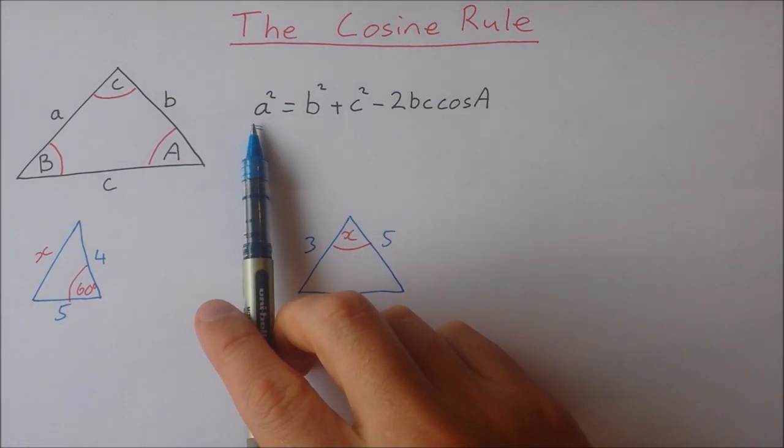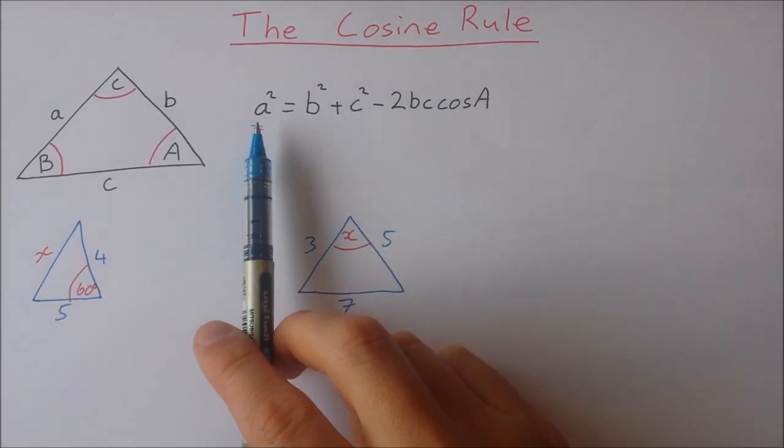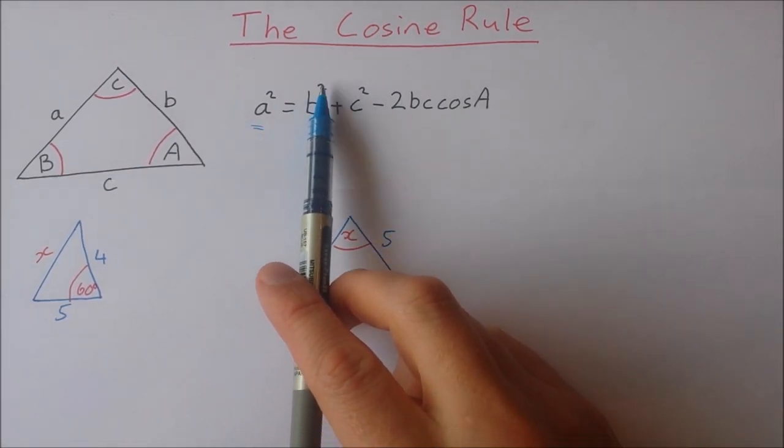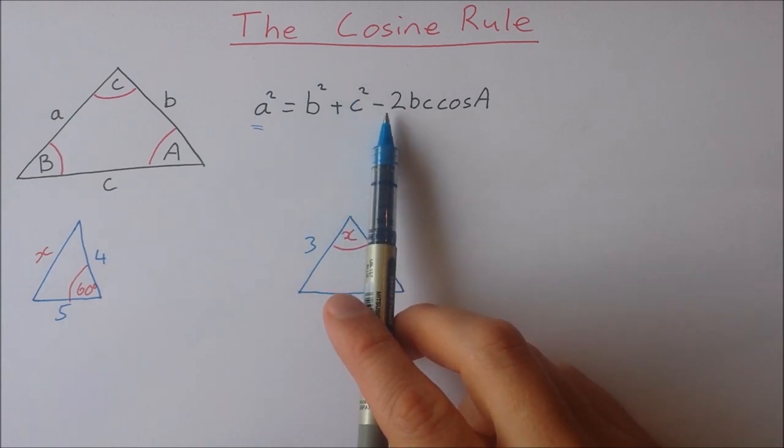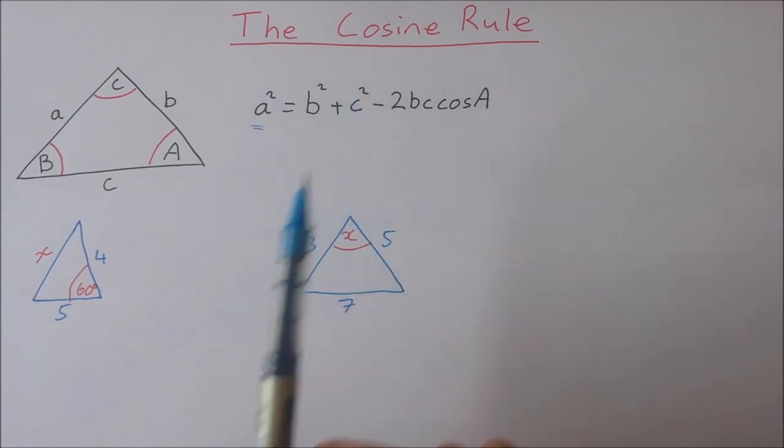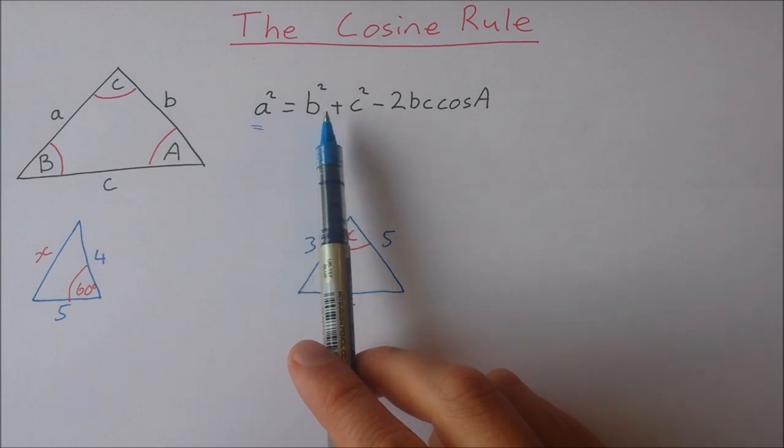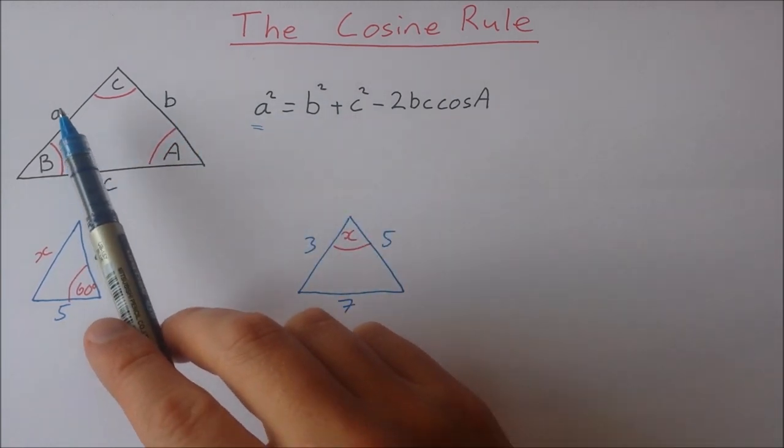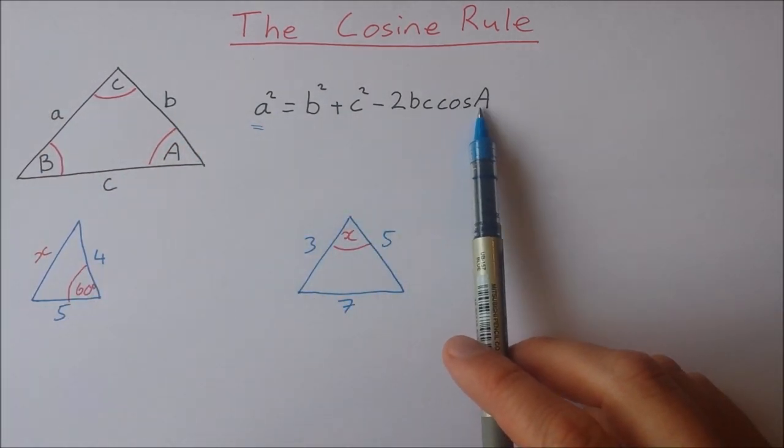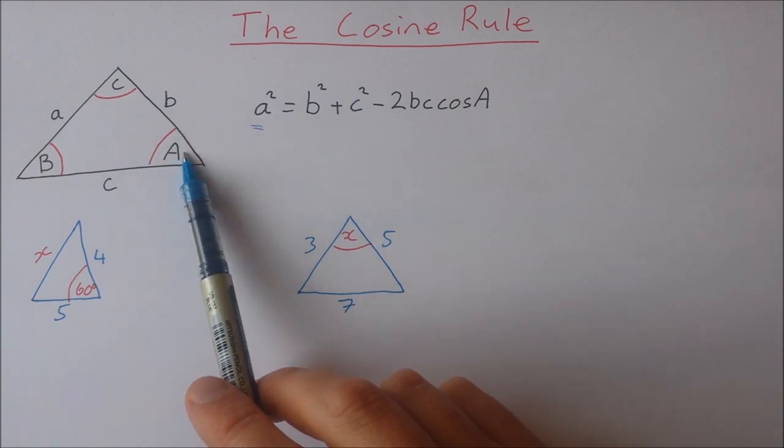Here's a reminder of the actual cosine rule. So we have a squared is equal to b squared plus c squared minus 2bc cosine A. Now small a, b, and c are the lengths of the sides. Big A is the size of the angle.